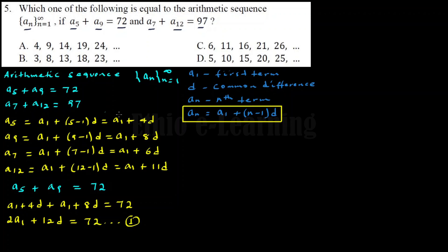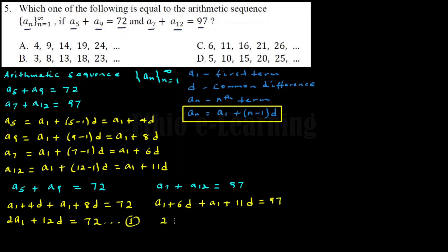Now for the second given equation: A sub 7 plus A sub 12 equals 97. Substituting: (A sub 1 plus 6D) plus (A sub 1 plus 11D) equals 97. Combining: 2A sub 1 plus 17D equals 97. This is equation 2.